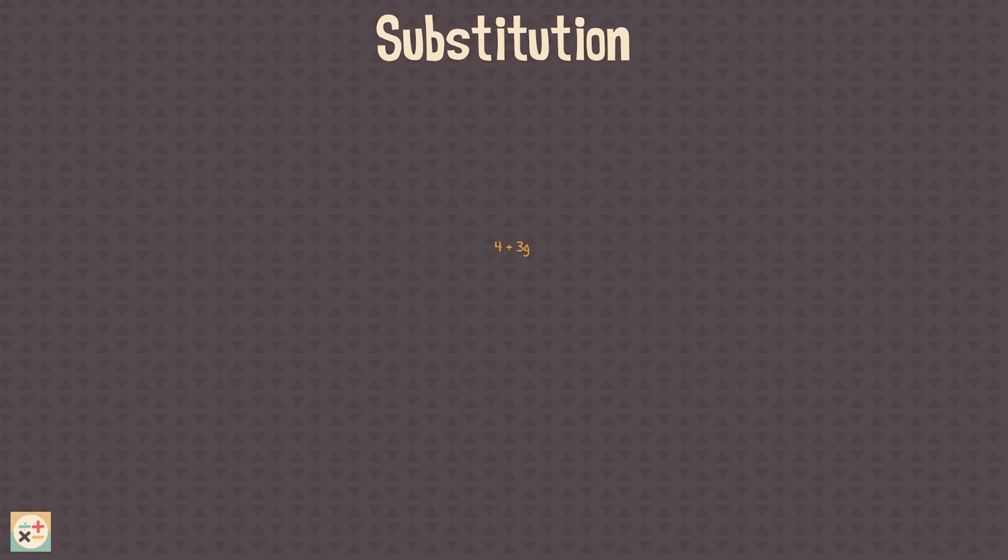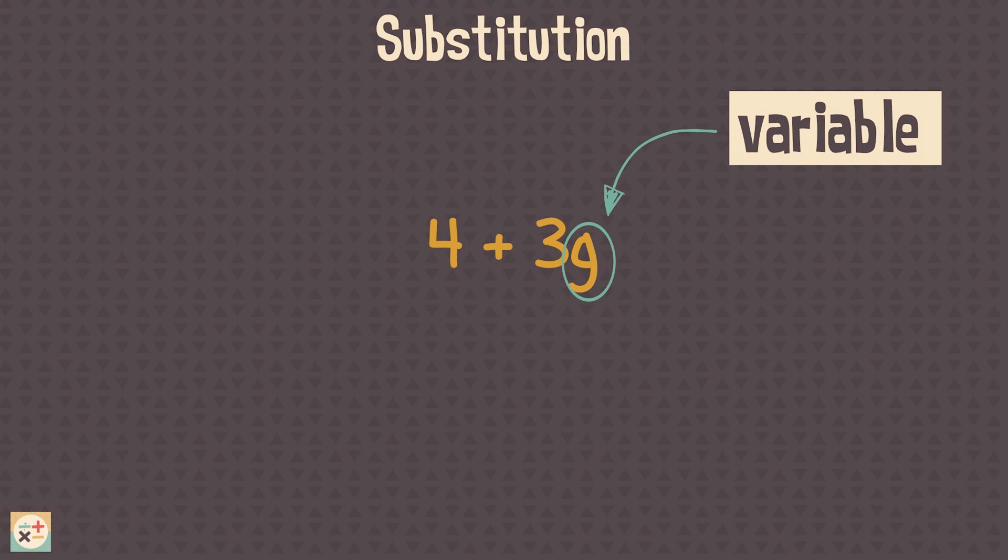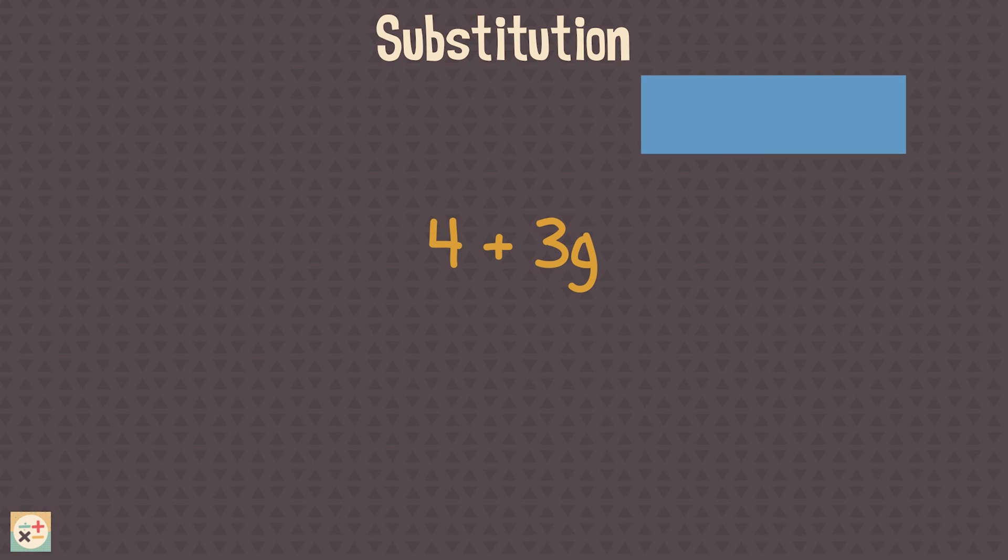Let's look at an example. Here the variable is the letter G. We can evaluate the expression ourselves using different values for the variable. Let's say we want to evaluate the expression when G equals 5.